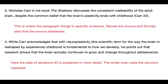It goes on with more of the source in number four: 'Carr acknowledges that with neuroplasticity, the scientific term for the way the brain is reshaped by experience, childhood is fundamental in how we develop. He points out that research shows the brain actually continues to grow and change throughout adolescence' — that's not childhood anymore. Here the idea of number three is explained in more detail — this is an elaboration on number three. The writer even uses the source as a naysayer. A naysayer is the voice that's opposite of the one you're arguing. The source acknowledges childhood shapes plasticity, but actually it continues into adolescence. So he challenges that opposite force, that naysayer.